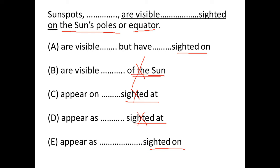Now in option A we have but. But demands contrast, so we need to understand, do we have a contrast in the sentence? Which is sunspots are visible but have never been sighted on. So we have a contrast, that means we need but.